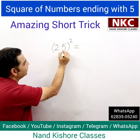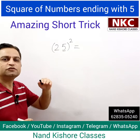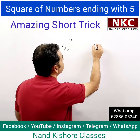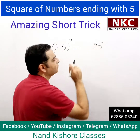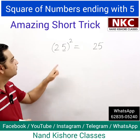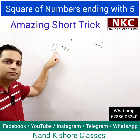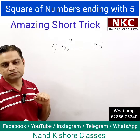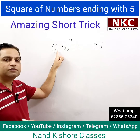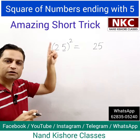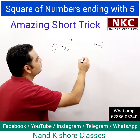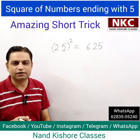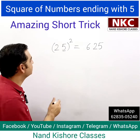When a number is ending with 5, just do its square — the square of 5 is 25, so write 25 here. Now, what to do with the first number? The first number 2 should be multiplied with the next number. The next number for 2 is 3, so 2 multiplied by 3 is 6. So the answer is 625. It's not difficult, it's very easy.